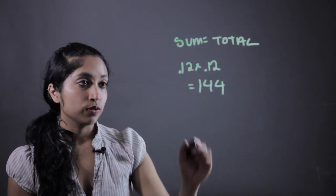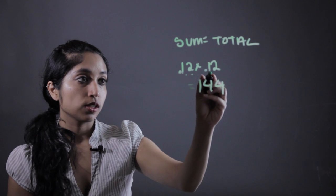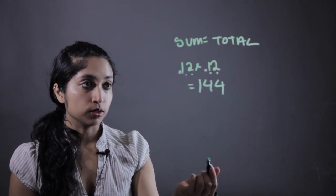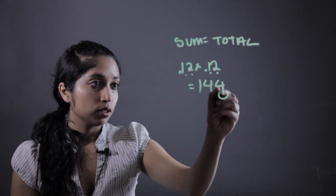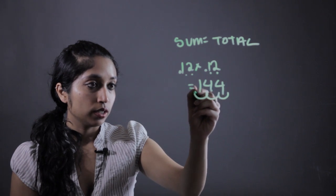Now we're going to count the number of decimals, which is 1, 2, 3, 4. So our answer has to have 4 decimals in it. So what we're going to do is go 1, 2, 3, and 4.